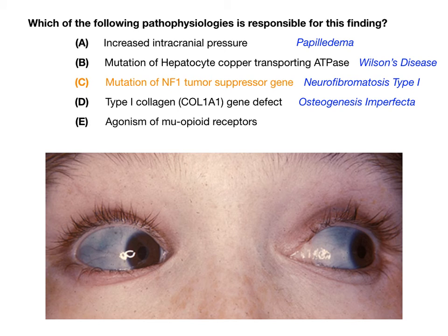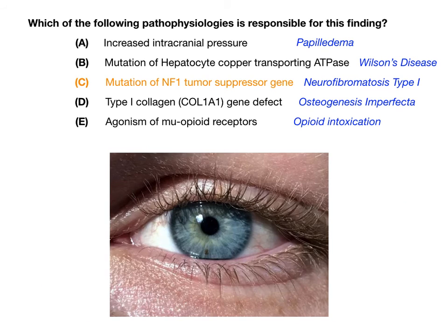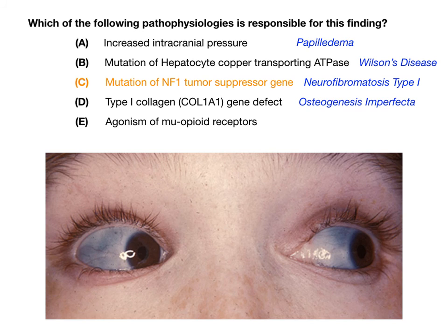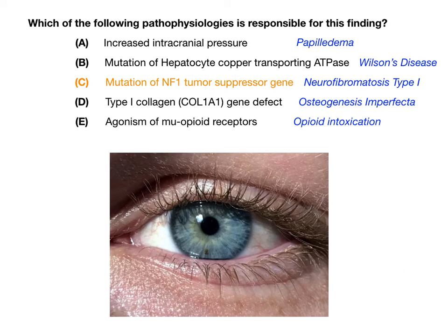Choice E says agonism of mu opioid receptors, which refers to opioid intoxication. In opioid intoxication you get pinpoint pupils — a very small central pupil. You might argue the original image shows a small pupil; however, because of the presence of Lisch nodules, choice C is the better answer. If the test writer wanted you to pick mu opioid receptor agonism, they would give you an otherwise completely normal eye with just pinpoint pupils. The original image showed Lisch nodules, associated with neurofibromatosis type 1.